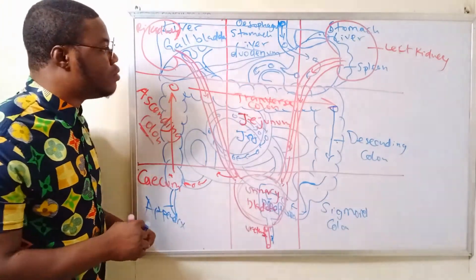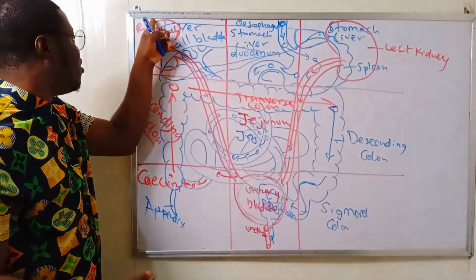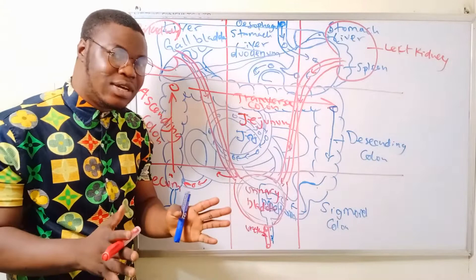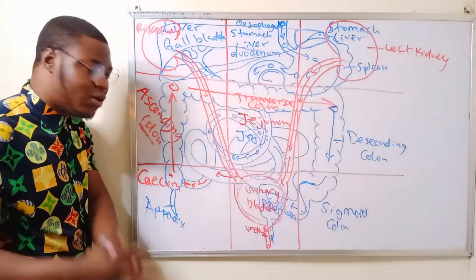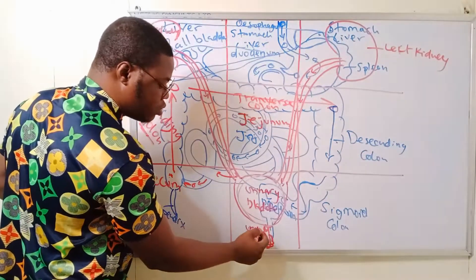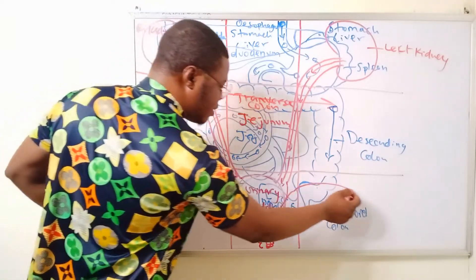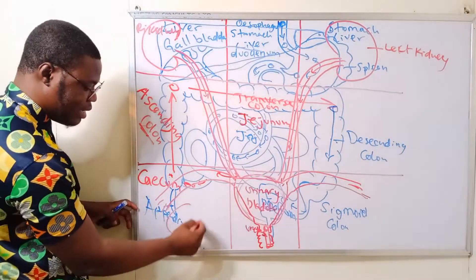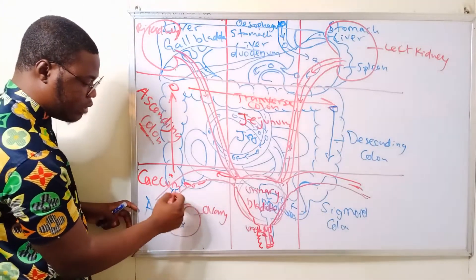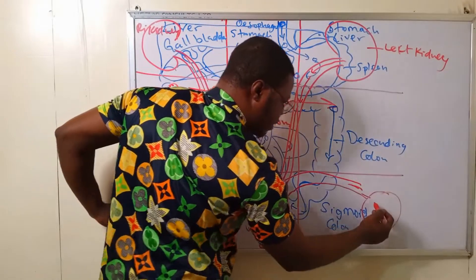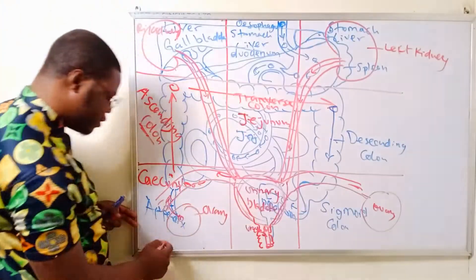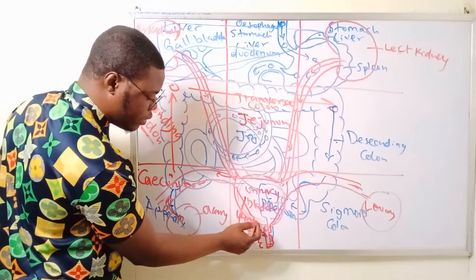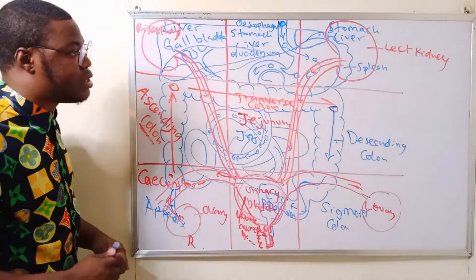For the female reproductive system: the vagina leads to the cervix, then to the uterus. The uterus extends via the fallopian tubes, which aim for the ovaries. The right ovary is in the right iliac region and the left ovary is in the left iliac region. The uterus, cervix, and vagina are found in the hypogastric/pelvic region.